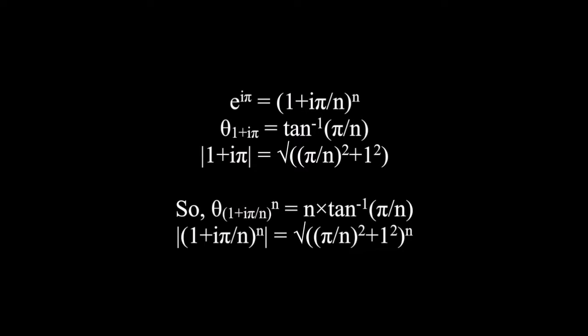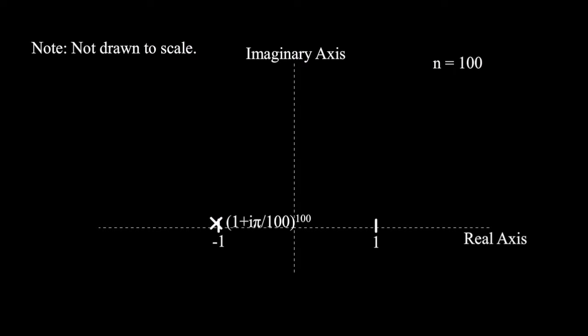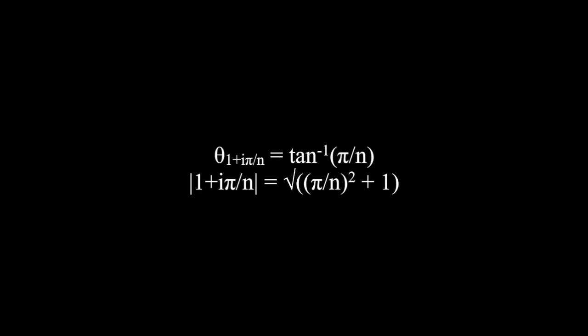As e to the i pi is defined for n approaching infinity, the larger our n, the closer we will get to e to the i pi's true value. This animation shows what happens for increasing values of n. Because we have a very large value of n, we can make a few simplifications.